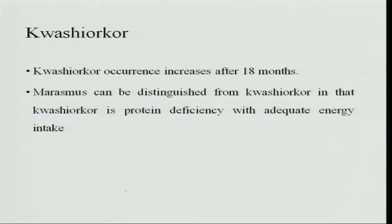Kwashiorkor occurs after 18 months of age. When the child is put on an adult diet and cannot feed itself properly, protein deficiency also occurs and the child progresses to the kwashiorkor stage.